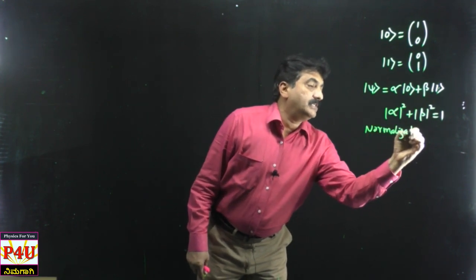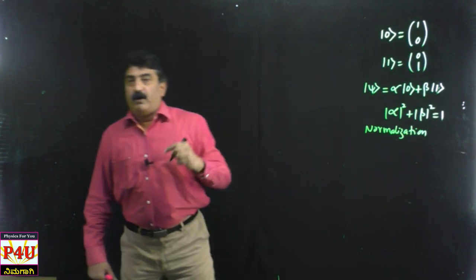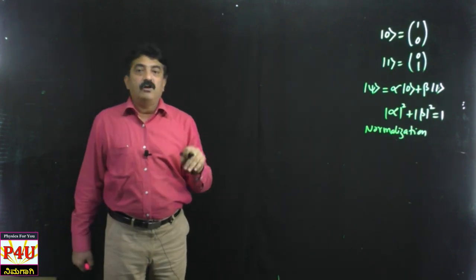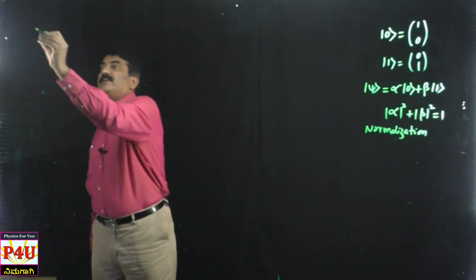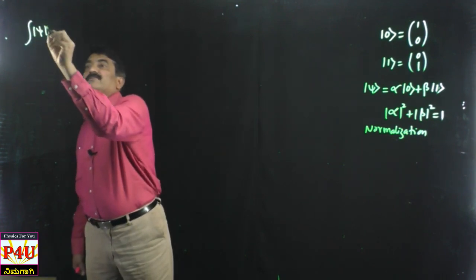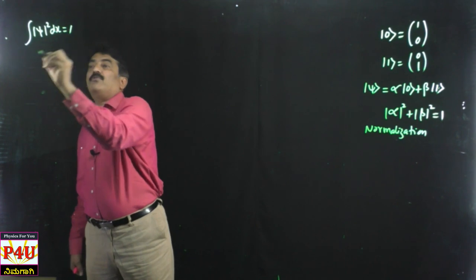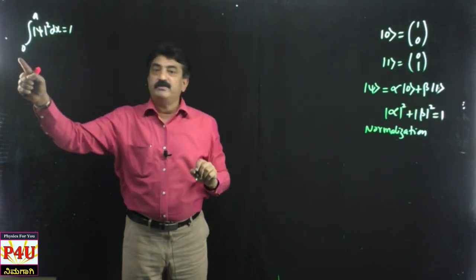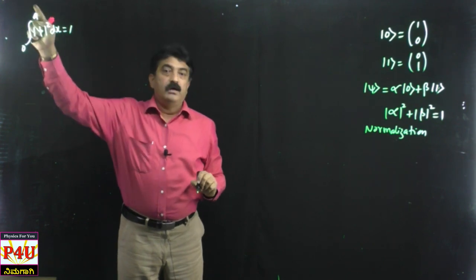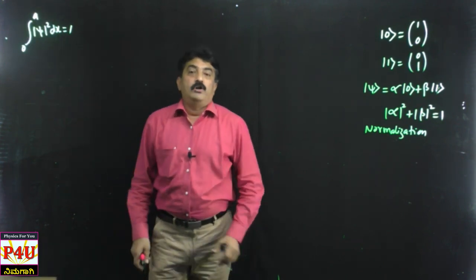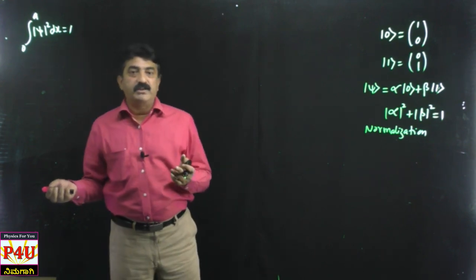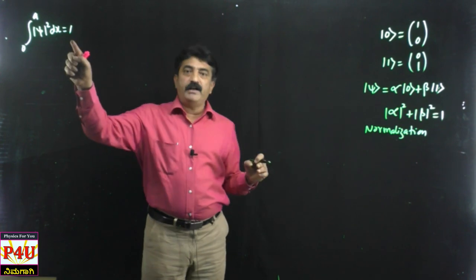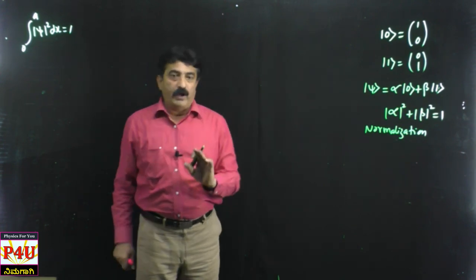You might have heard of normalization in the particle-in-a-one-dimensional-box: the integral of modulus of psi squared into dx equals 1, between 0 and a. It is not necessarily 0 and a — it can be from 0 to infinity, or surface integration, or volume integration for three-dimensional normalization. This is one-dimensional normalization. Normalization finally amounts to be 1.